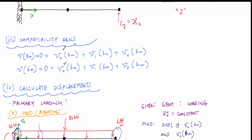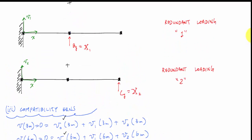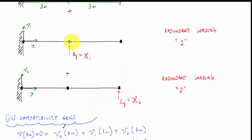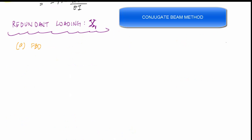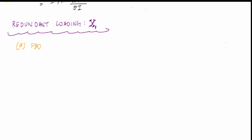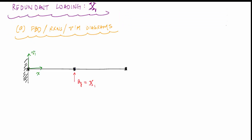Now that I've calculated the displacements for the primary loading, I want to calculate displacements for each of the redundants. I'll start with redundant one at three meters and at six meters. For this I'll use the conjugate beam method, though I could use double integration again. The first step is to draw the free body diagram with the loading, solve for reactions, and then draw the shear and moment diagrams.